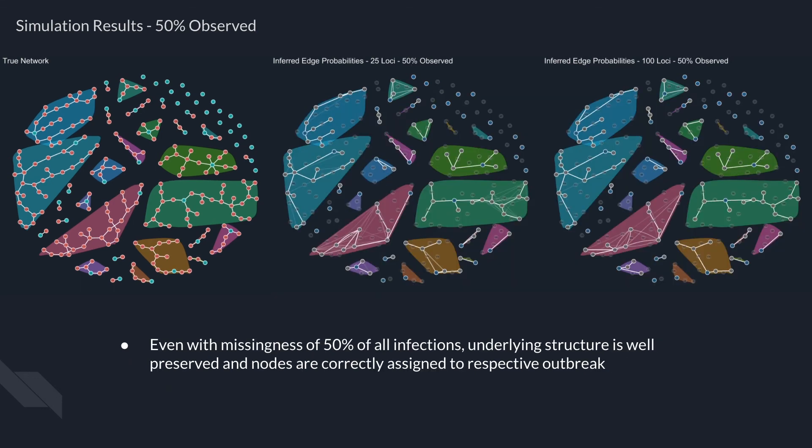We next demonstrate the impact of missingness. Here, we allow for 50% of all nodes to be missing at random. Even with substantial missingness, underlying structure is well preserved, and nodes are correctly assigned to respective outbreaks.